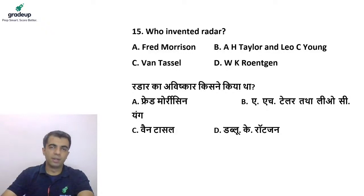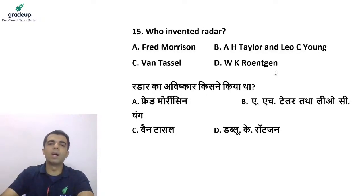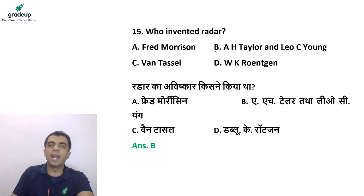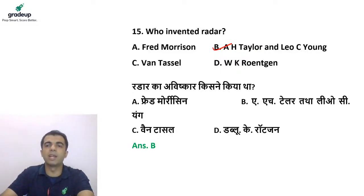Next question: who invented radar? Options are Fred Morrison, A.H. Taylor and Leo C. Young, Van Tassel, and W.K. Rontgen. Radar is used for detection of radio waves, determining range, angle, and velocity of objects. The answer is option B — A.H. Taylor and Leo C. Young. Their radar comprised a transmitter, transmitting and receiving antenna, a receiver, and a processor.